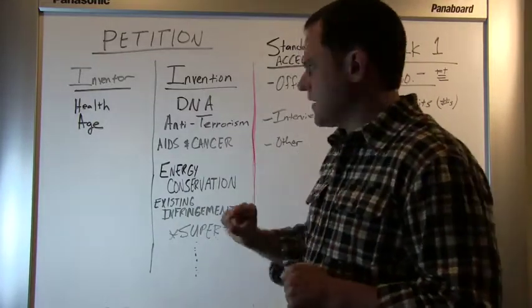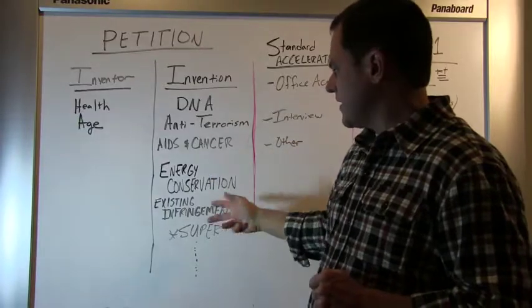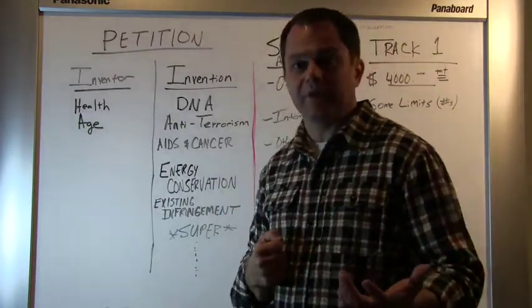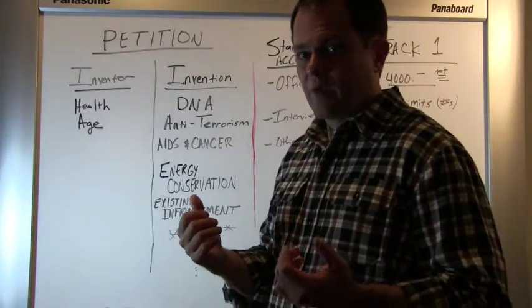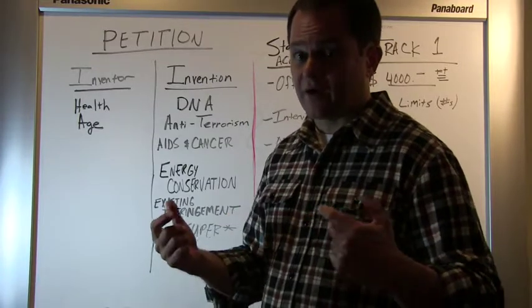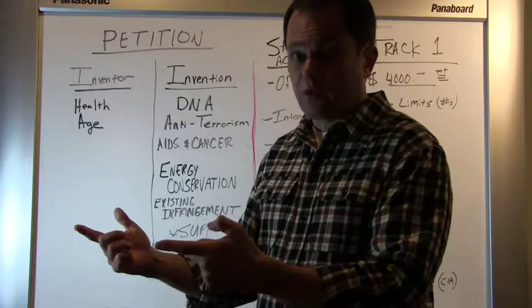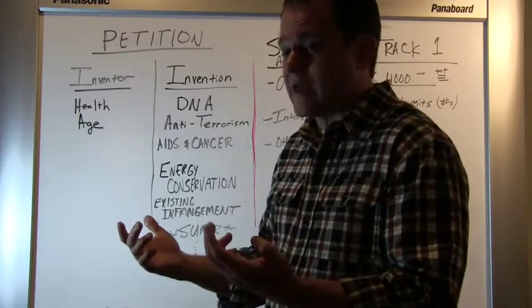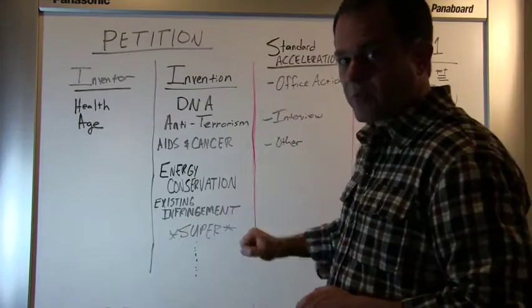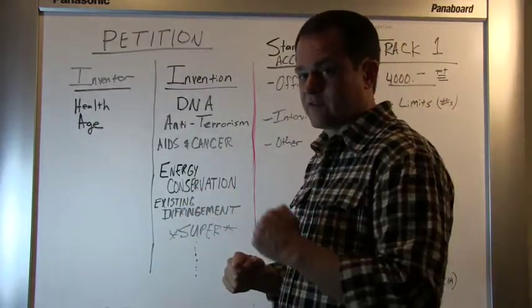One example of something that's invention related that's not dependent on the invention's category is an existing infringement. So if you filed a patent application and then a year and a half later, while it's still in prosecution, you discover that a competitor has copied your invention and is shipping it to the stores, or even if they're merely making it and you're aware of it, you can file a petition and make it special so that your application can be examined quickly and so you can then stop your competitor.